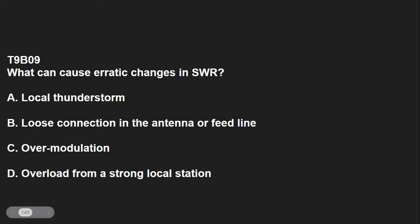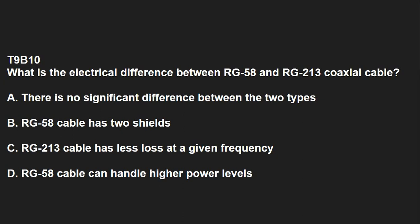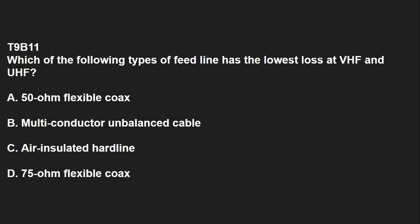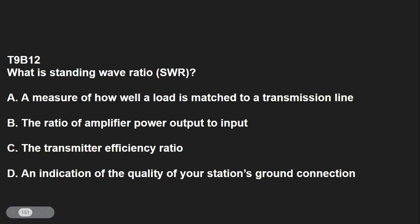T9B09: What can cause erratic changes in SWR? A loose connection in the antenna or feed line. T9B10: What is the electrical difference between RG-58 and RG-213 coaxial cable? RG-213 has less loss at a given frequency. T9B11: Which of the following types of feed line has the lowest loss at VHF and UHF? That's air-insulated hard line. T9B12: What is standing wave ratio, also known as SWR? That's a measure of how well a load is matched to a transmission line.